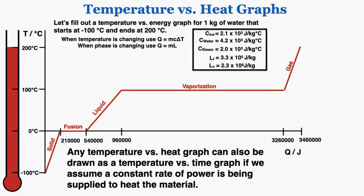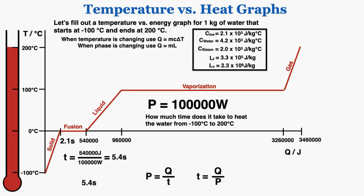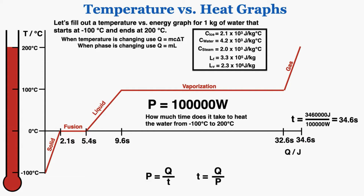Any temperature versus heat graph can also be drawn as a temperature versus time graph if we assume a constant rate of power being supplied. For example, with a constant power supply of 100,000 watts, time equals heat divided by power. The first segment takes 2.1 seconds, reaching the fusion point at 5.4 seconds, then 9.6 seconds, 32.6 seconds, and finally 34.6 seconds to reach 200°C. Temperature versus time graphs assume a constant rate of power being supplied.